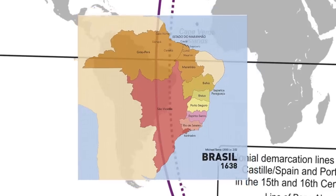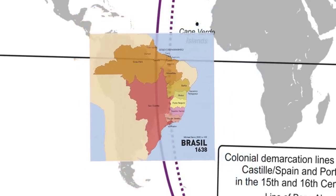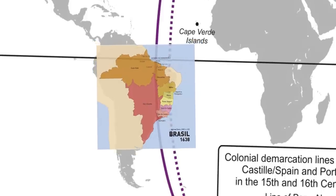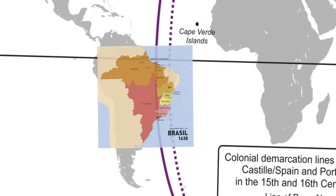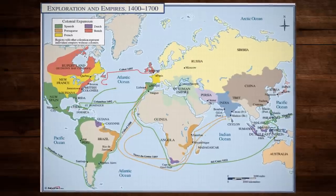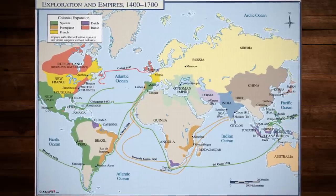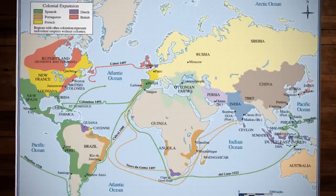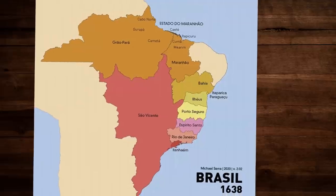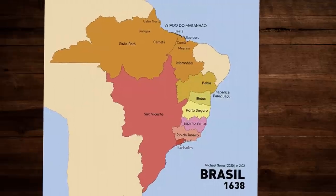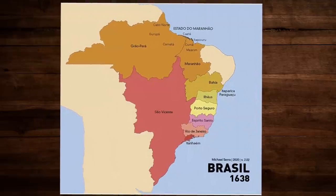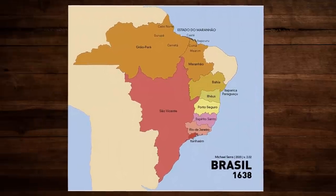By this time, the expansion of the territory had already surpassed the lines established in the Treaty of Tordesillas — but then again, the treaty wasn't respected anywhere else in the world once other European powers started colonizing. Captaincies were no longer the many initial ones, but a smaller number which were larger in territory.